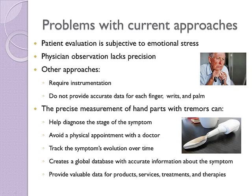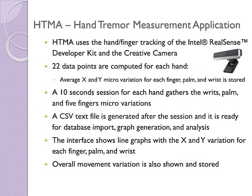Additionally, the availability of accurate data can be useful for therapies, treatments, services and products, such as the recent spoon that counterbalances hand tremors.